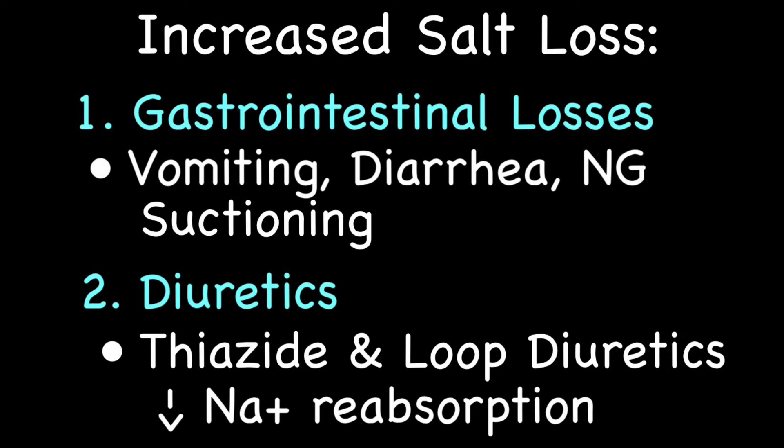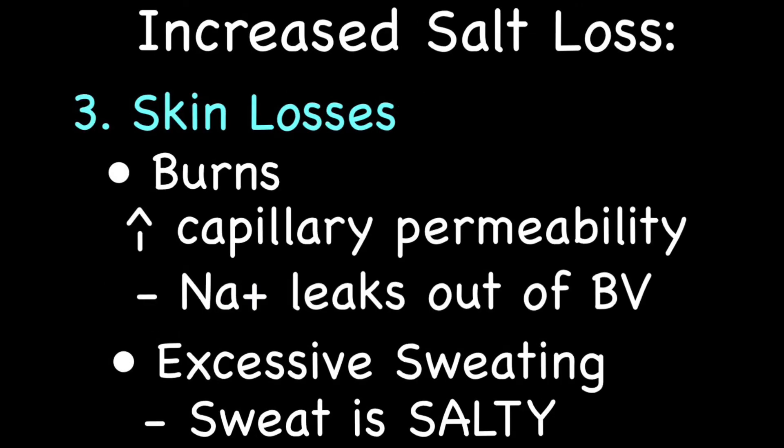Moving on to increased salt loss — the first source is gastrointestinal losses: vomiting, diarrhea, or excessive nasogastric tube suctioning can cause increased sodium loss, since the GI tract contains a lot of sodium. The second cause is diuretics — thiazide diuretics in particular increase sodium excretion, and loop diuretics can also cause hyponatremia, though this is less common. Salt loss can also occur through the skin in burns, which alter capillary permeability and allow sodium to leak out.